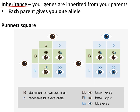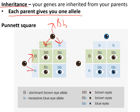Your genes are inherited from your parents — you get one allele from each parent. This can be shown with a Punnett square. For example, a heterozygous parent with genotype Bb contributes either B or b in their sperm, and similarly their eggs are half B and half b. The Punnett square shows all the different combinations of alleles that can result in the offspring.